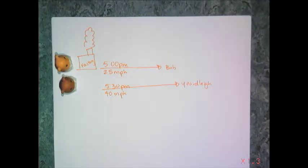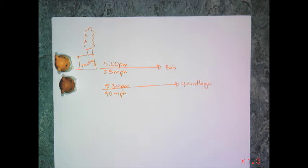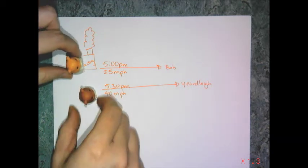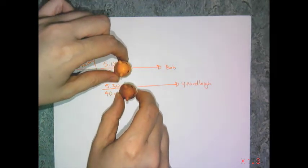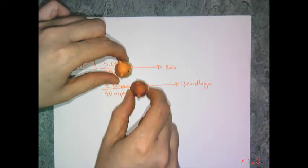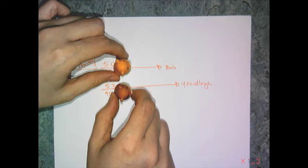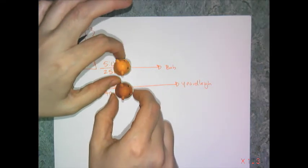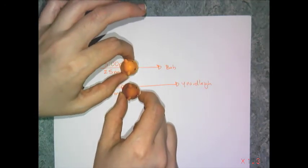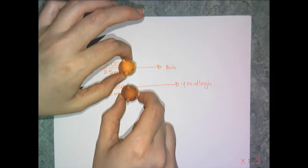Now for the rate-times-distance problem, same direction. You read the word problem, and I drew a crude picture of the situation with all the known information. Bob leaves before Yardley but goes slower; Yardley leaves later but goes faster. Your job is to figure out when Yardley passes Bob. When people go in the same direction, you want to know when they're at the same place at the same time — that tells you about the distance.